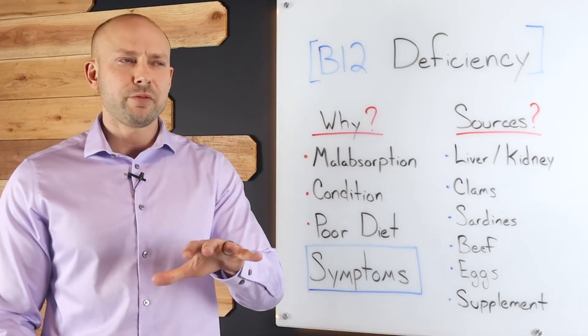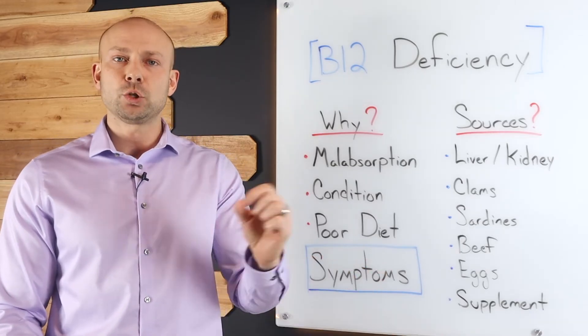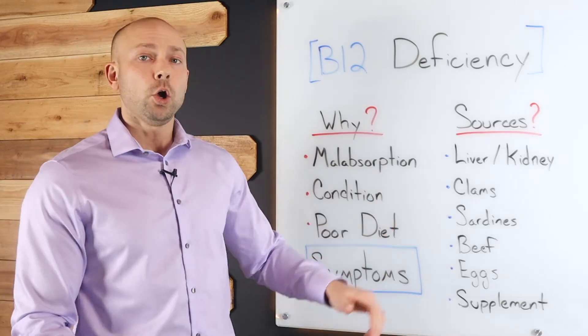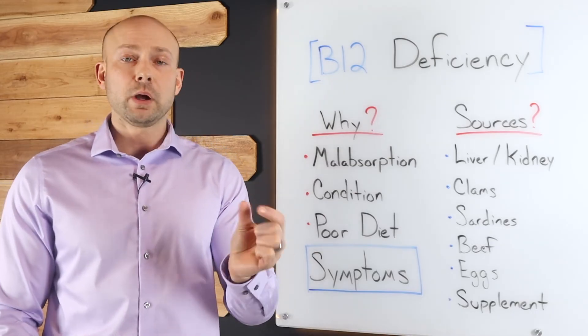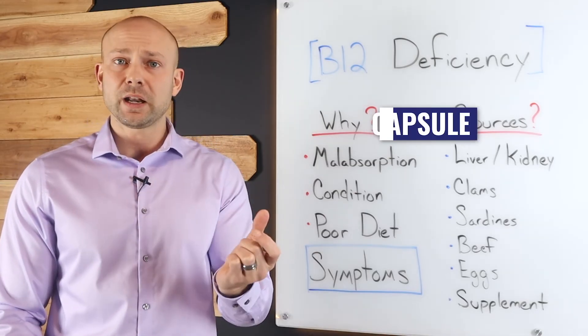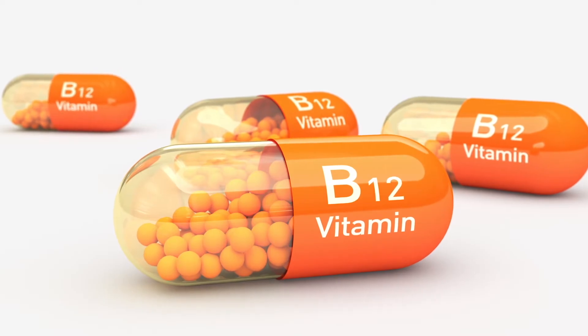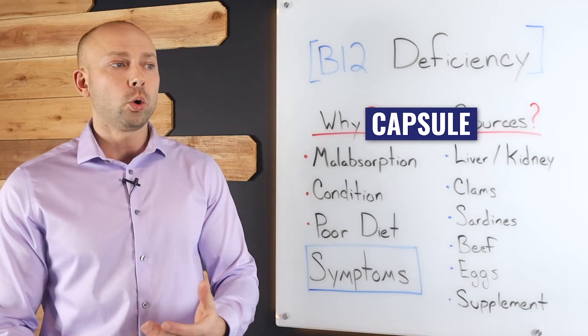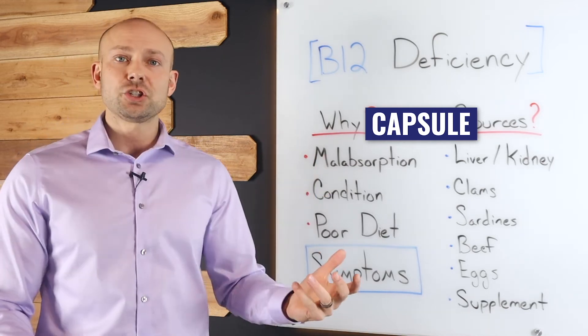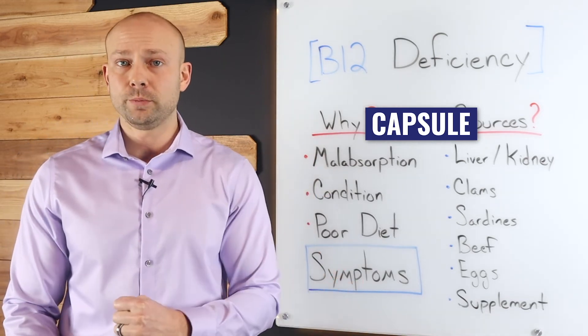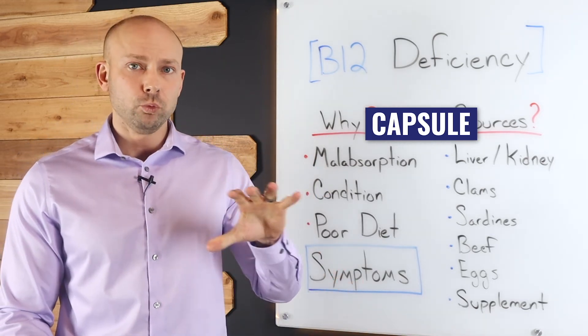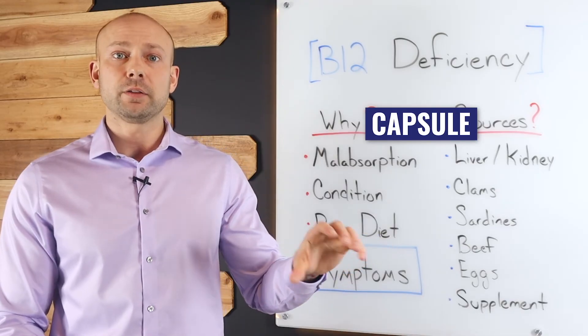There's three kind of mainstream ways that you could get B12 in outside of food. One is you could actually go and buy a capsule with a powder in it. You take it. The problem with that is if you actually have the inability to absorb it properly or if you are suffering from a gut condition, there's a good chance that you're not going to absorb it. So that's not a really good way to get B12 from a capsule.